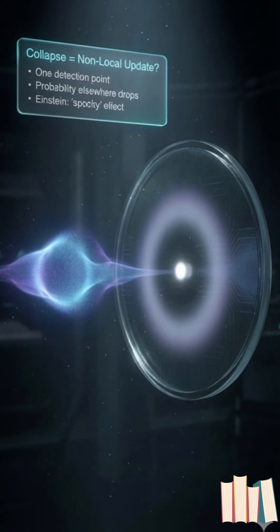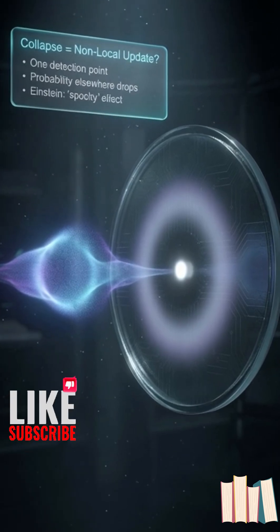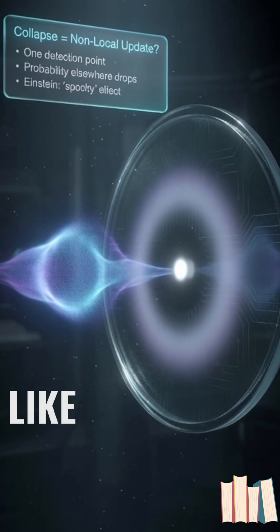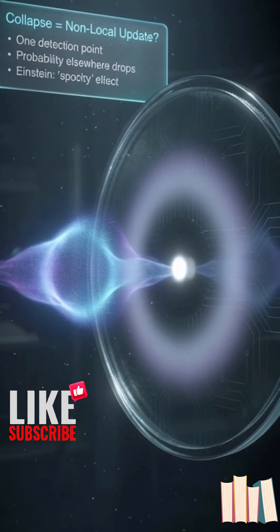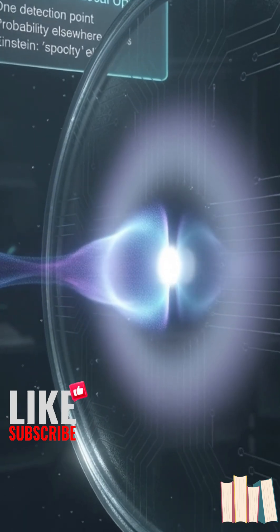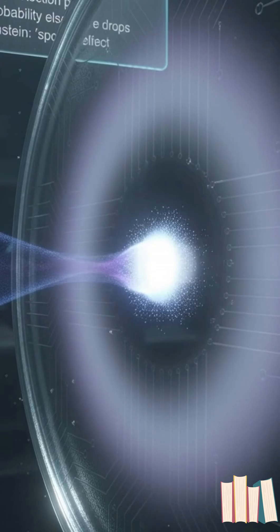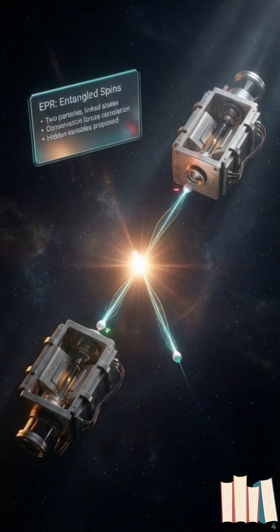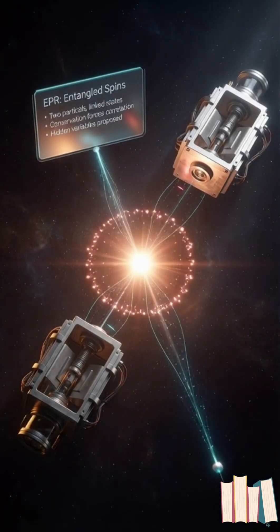But quantum mechanics has a weird move called the wave function collapse. Measure a particle here, and the probabilities over there update instantly. Einstein thought, if that's real, it's spooky action at a distance.